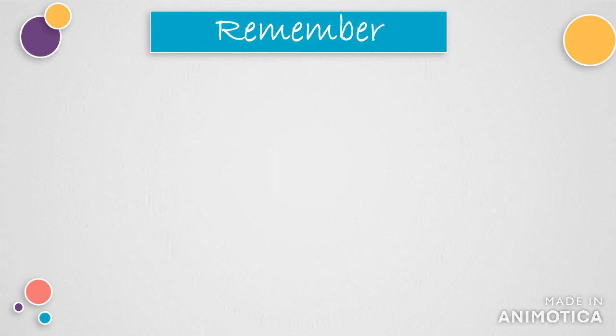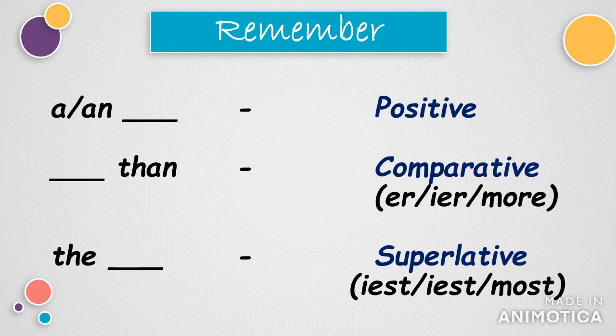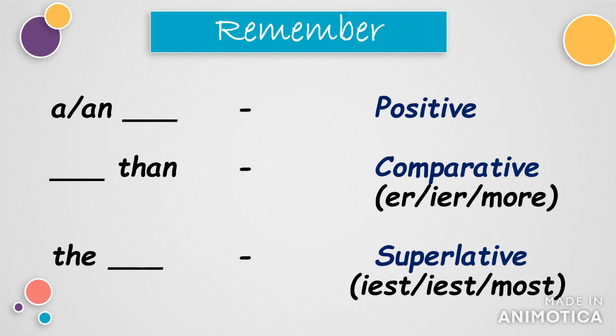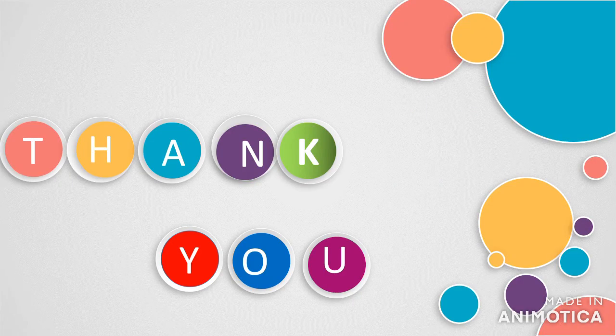So remember children: if you find the article 'a' or 'an' before the blank, we use the positive degree; if the word 'than' appears in a sentence, we have to use the comparative degree; and if the article 'the' appears just before the blank, we have to use the superlative degree. Hope the concept of degrees of comparison and their usage in sentences is clear to one and all. Thank you all for watching this video.